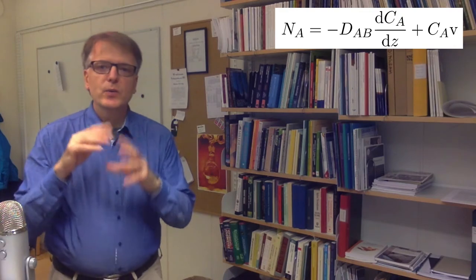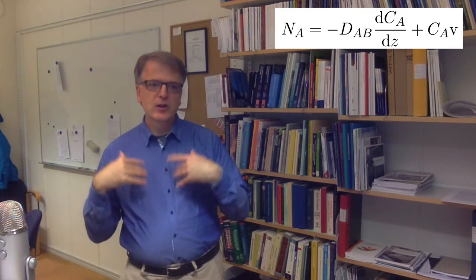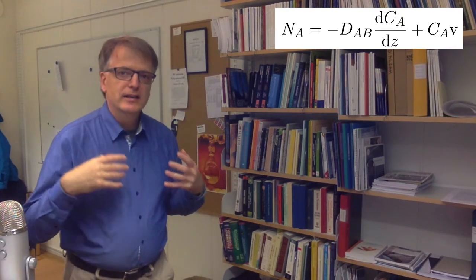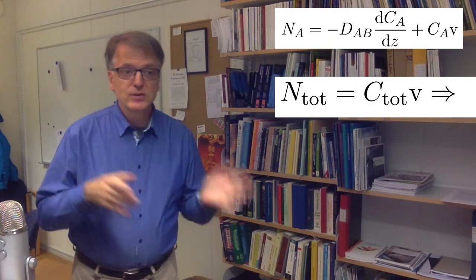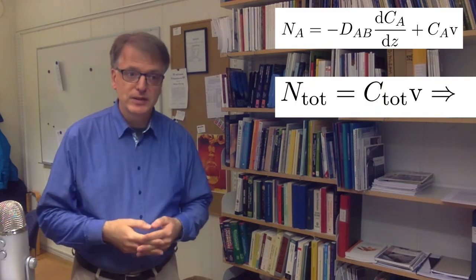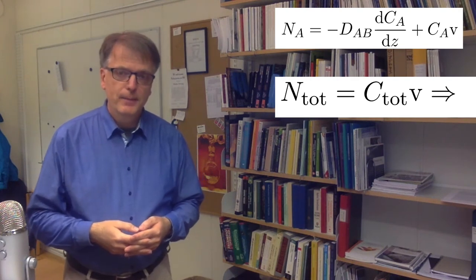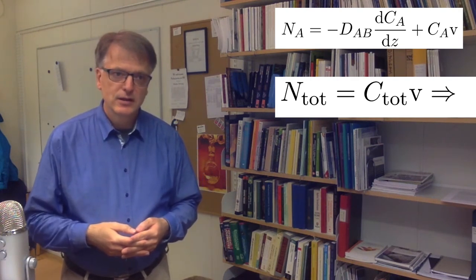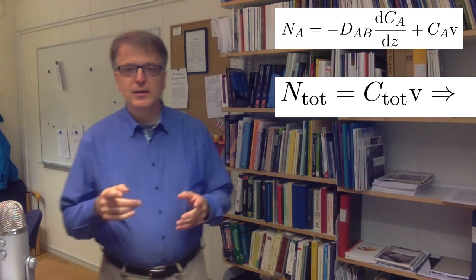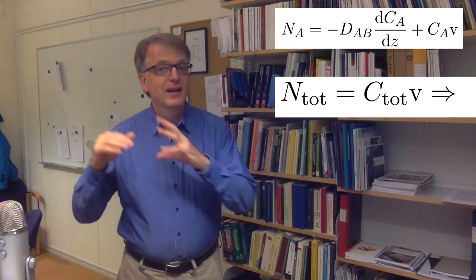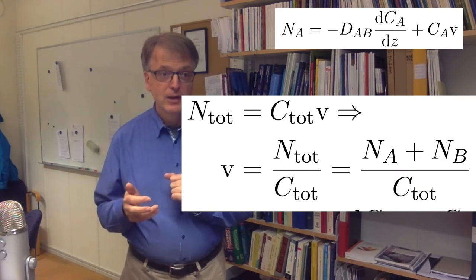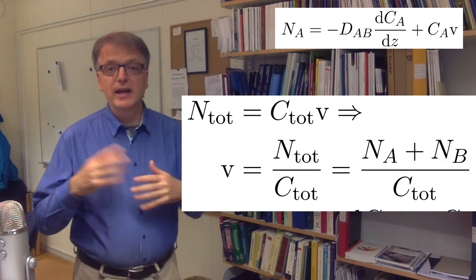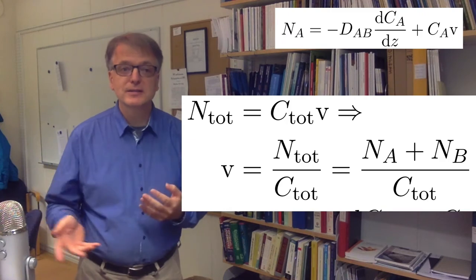Yeah, there is. Because we saw before that the total mass transport is the concentration times the velocity, right? So n-tot equals c-tot times the velocity. But what is the velocity? Well, n-tot, that must be the moment of A plus the moment of B. So this means that v equals n-A plus n-B divided by c-tot.